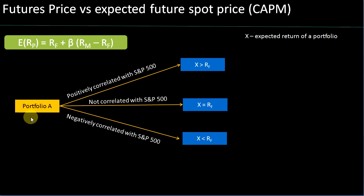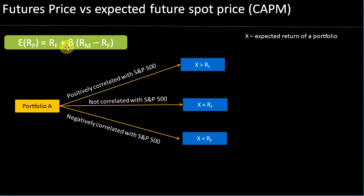If you have a portfolio A, or let's assume you hold a particular asset — say a US stock — and this portfolio is positively correlated with the S&P 500 (which we'll treat as a reflection of the whole market), then if the market moves upward, the portfolio will also move upwards, and if the market drops, the portfolio would also drop. Since it's positively correlated, the beta is a positive number. If beta is positive, this whole term will be greater than zero, which means the expected return on the portfolio will definitely be greater than the risk-free rate.